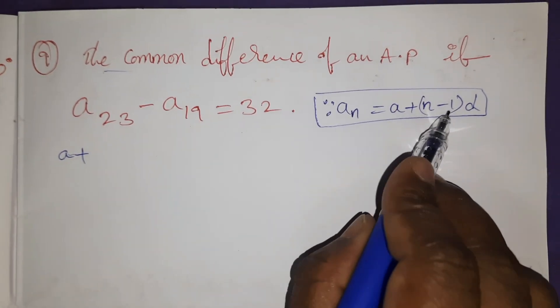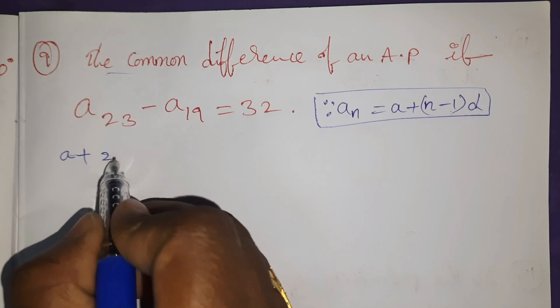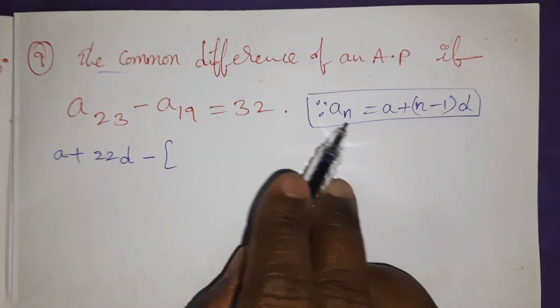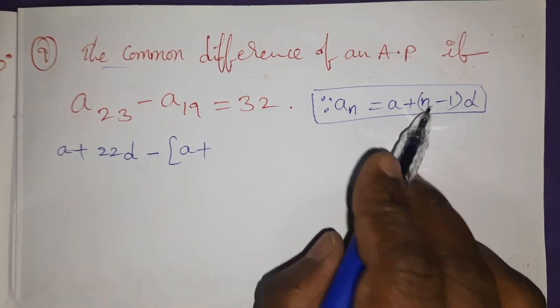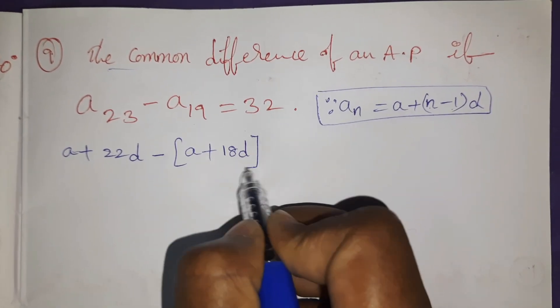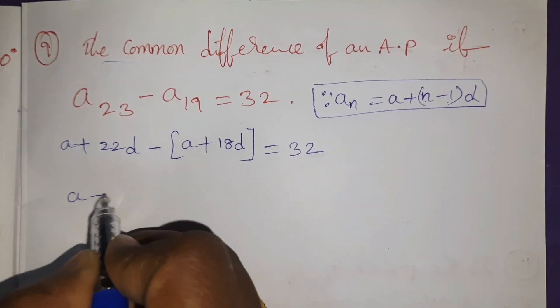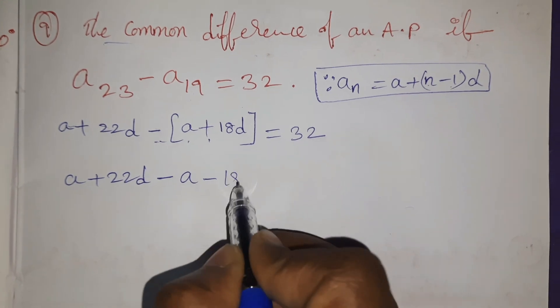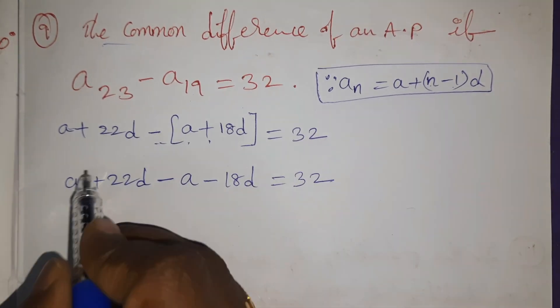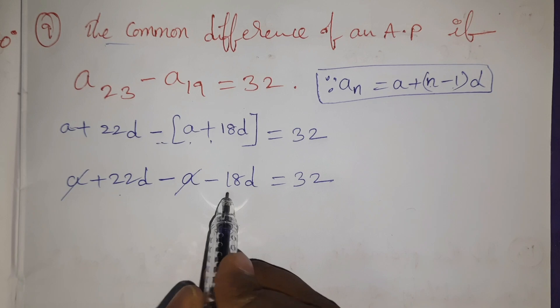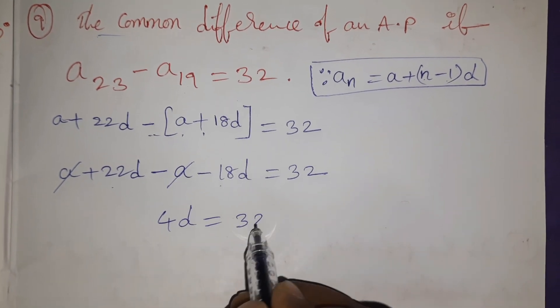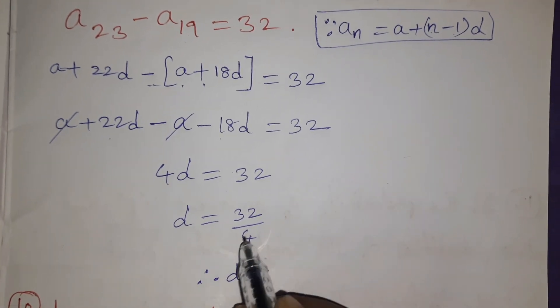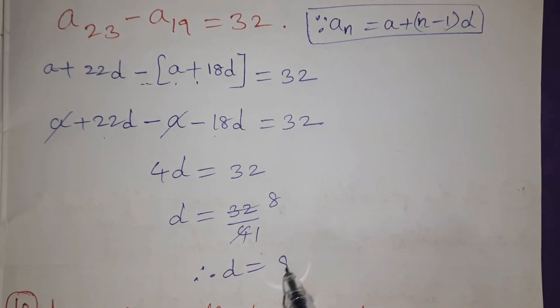Minus A₁₉ means N in the place 19. A + 18D = 32. A + 22D - A - 18D = 32. A gets cancelled. 22D - 18D is 4D = 32. 4D = 32, D = 32/4. Therefore, D = 8, answer is 8.